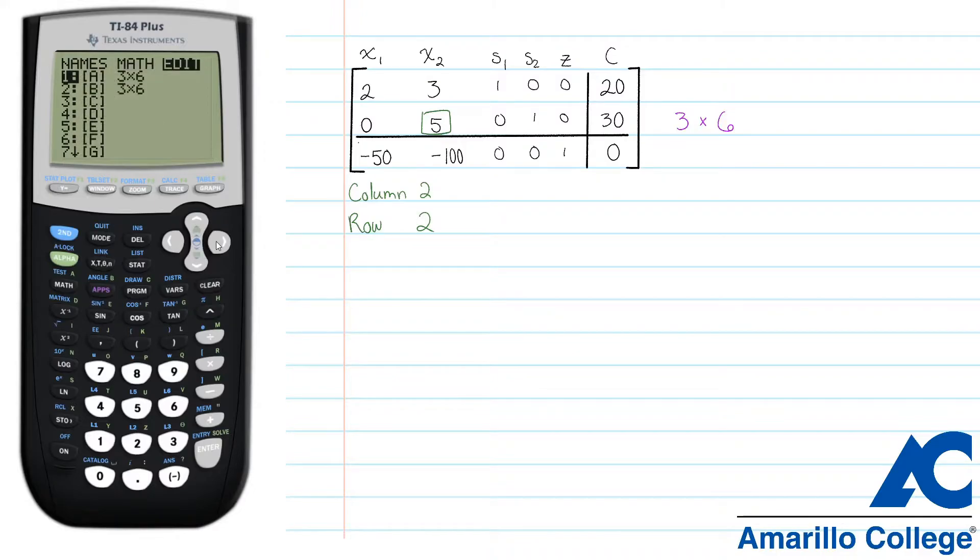Go to the edit with the arrow keys, and press enter while A is highlighted. If your screen doesn't look exactly like this, don't panic. That just means you have a different matrix in your calculator. Type the size in these first two blanks. Ours is three by six, so these two numbers will do fine.